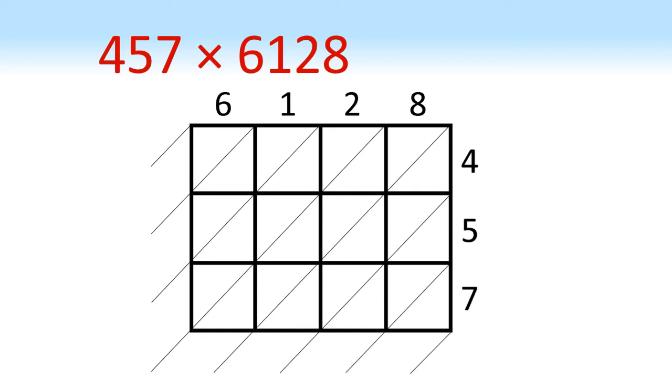So in the top left square, 4 times 6 is 24. Then we have 1 times 4 is 4, again putting a 0 in the tens box. 2 times 4 is 8, and 8 times 4 is 32.